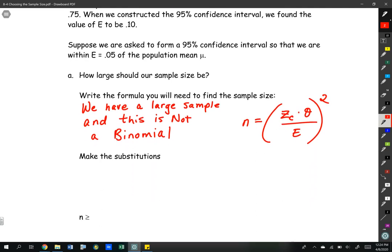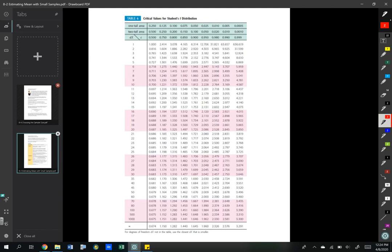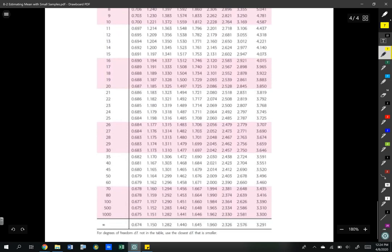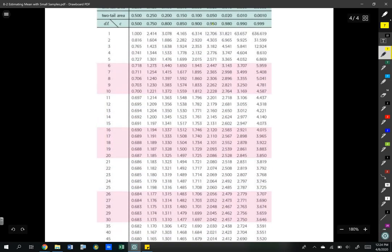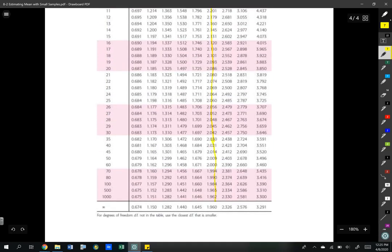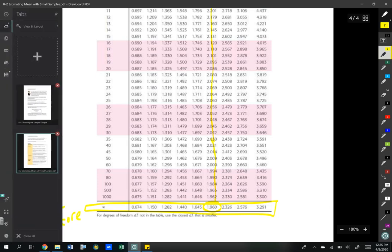We want to identify z sub c, we want to identify what sigma is, and we also want to know what E is. We want a 95% confidence interval. So what is the value of z for a 95% confidence interval? You would use the bottom row of table 6. We're looking for z for 0.95, and that's 1.96.